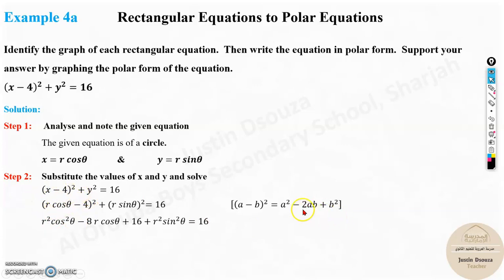r² cos² theta minus 2 times ab. The a term is r cos theta, b is 4. So let's multiply all the numbers: 2 into 4, that is 8r cos theta, plus b² is 16, 4² is 16. Now, just square them up: plus r² sin² theta equals 16.